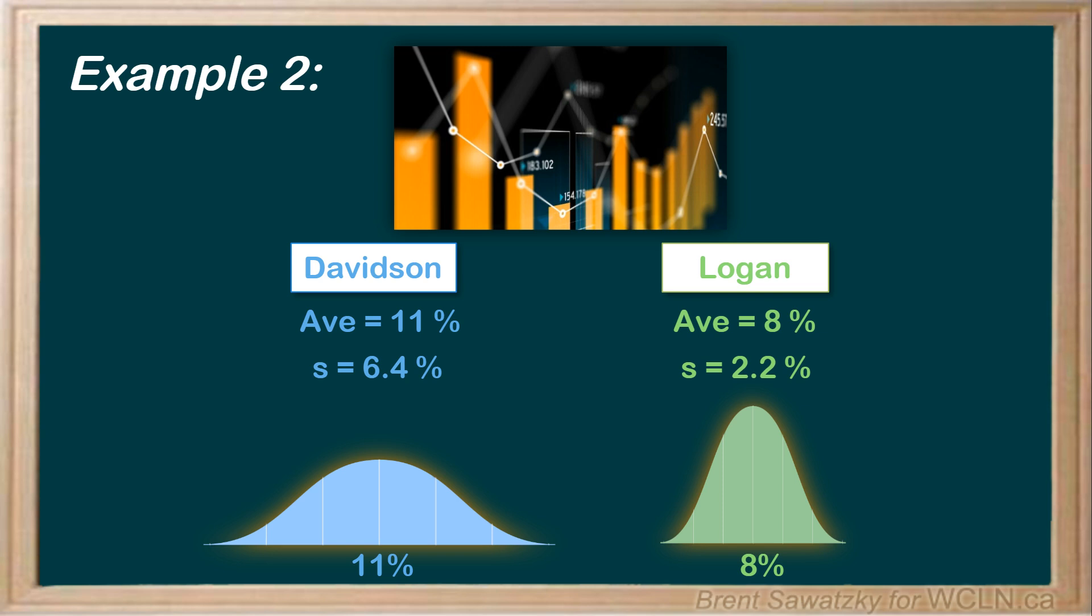In this case, the standard deviation could help us make better decisions about investing, beyond what we could have realized with only the average. The Davidson strategy has a higher average, sure, but there's definitely a lot more uncertainty involved there. We could say that this strategy has higher potential reward, but we also see increased risk. A bit more scary if you really need to count on a particular return, right? What's your risk tolerance?